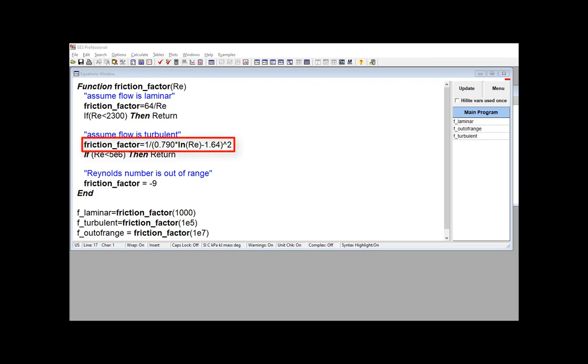And I'll assign the friction factor a value using this correlation. Again, this correlation is only valid up to 5 times 10 to the 6th. So I should check and see if the Reynolds number I provided is less than this upper limit. And if it is, then I'm good, and I should return and be done inside of this function.